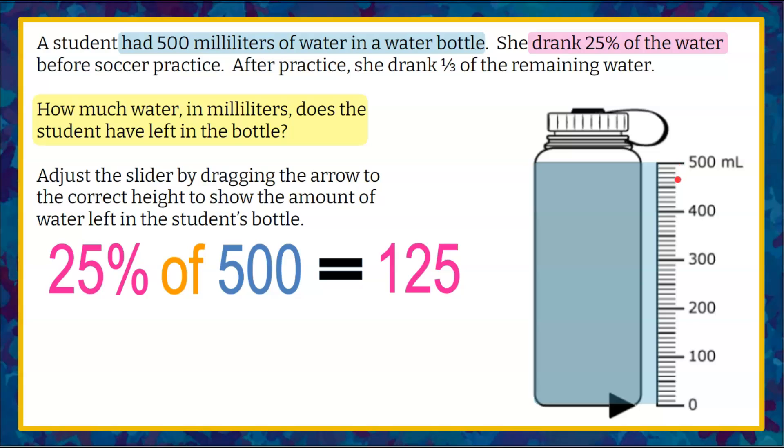So we're going to reduce from 500 milliliters, she drank 125 milliliters. 500 minus 125 milliliters brings us to 375 milliliters.